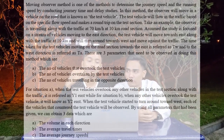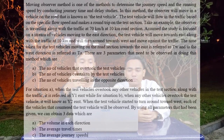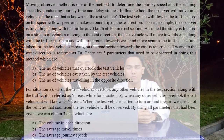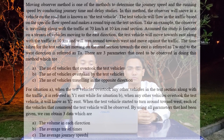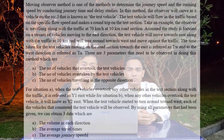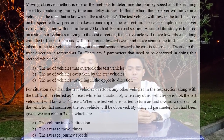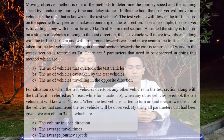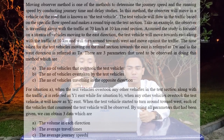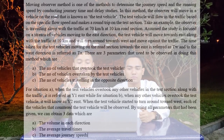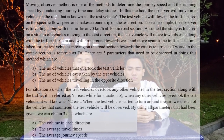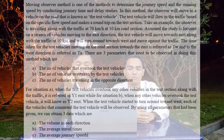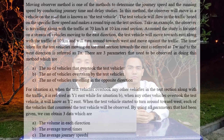For situation A, when the test vehicle overtook any other vehicles in the test section along with the traffic, it is referred to as Y1E. For situation B, when any other vehicles overtook the test vehicle, it is known as Y2E. When the test vehicle starts to turn around towards west, each vehicle that counters the test vehicle will be observed. Using all these parameters, we can obtain 3 data: the volume in each direction, the average vehicle time, and the average journey time.